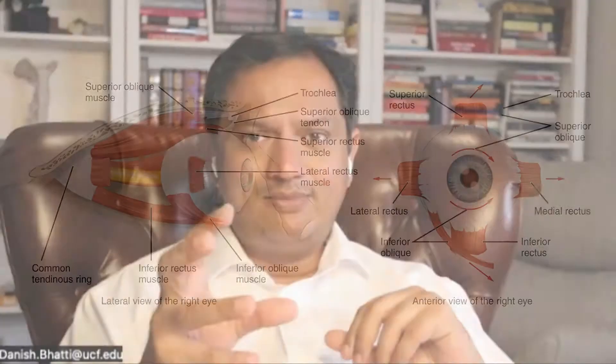What is the third nerve palsy? The eyeball is moved by six muscles and supplied by three cranial nerves: cranial nerve three, four, and six. Now, cranial nerve four and six each supply one muscle, so that makes it easy.